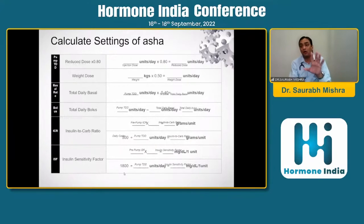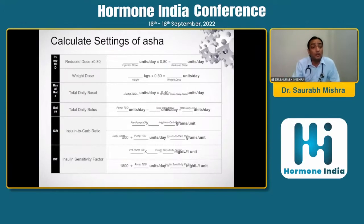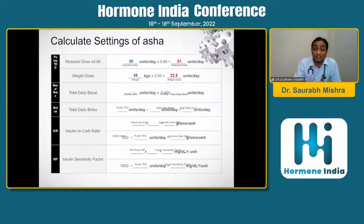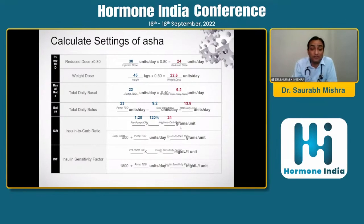Each person listening — beginners or otherwise — can take a snapshot of this slide, as these are the only calculations used in insulin pump therapy worldwide. For Asha, pump daily dose calculated by weight comes to 22.5 units, and using the injection-based formula gives 24 units. Total daily basal on the formula is 9.2 units; total daily bolus is 13.8 units, which can be distributed across three meals. Insulin-to-carb ratio and insulin sensitivity factor are verified using the 500 and 1800 formulas respectively.